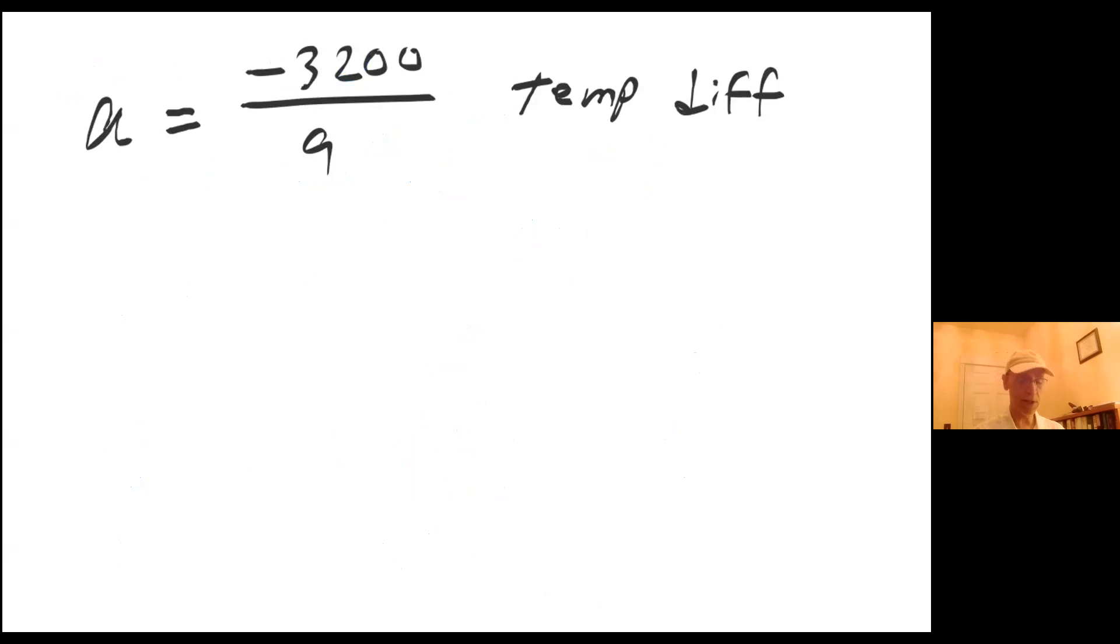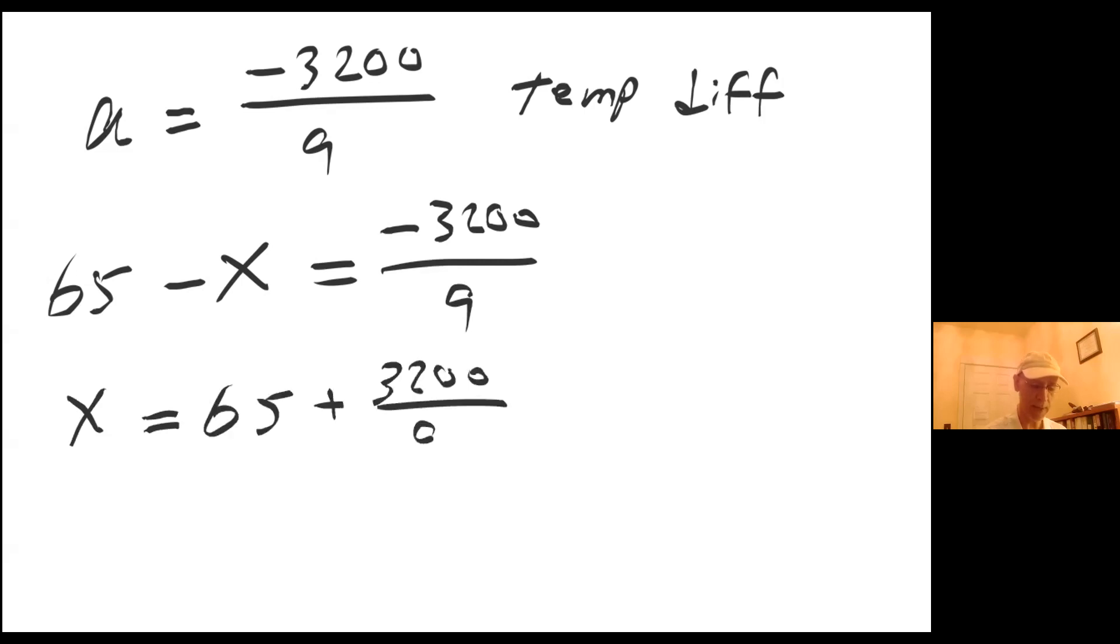But I want to know what the temperature was. So I'm going to ask myself, 65 minus what equals negative 3200 over 9. So by rearranging, I get X equals 65 plus 3200 over 9. Put that in calculator, 65 plus 3200 divided by 9. My calculator shows me 420.55. And that's the same answer that we got last time. I hope you liked this explanation and thank you.